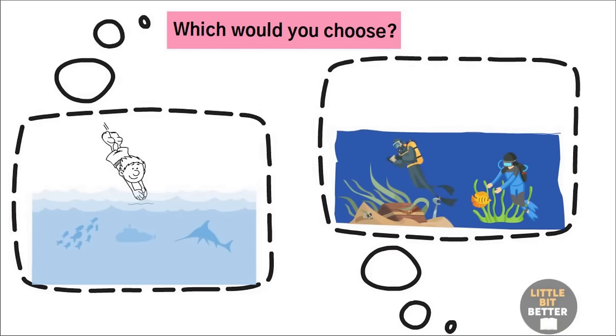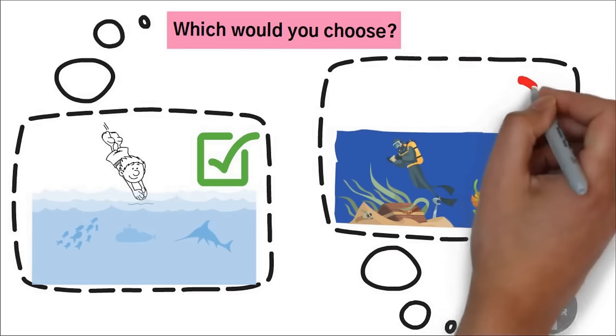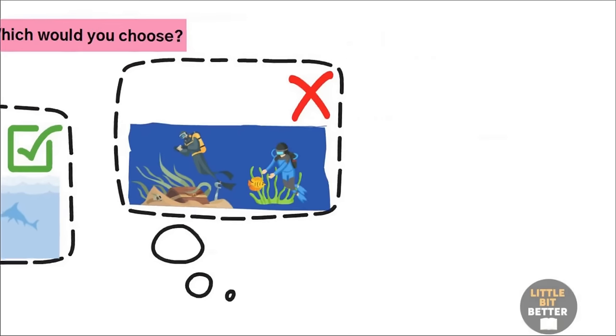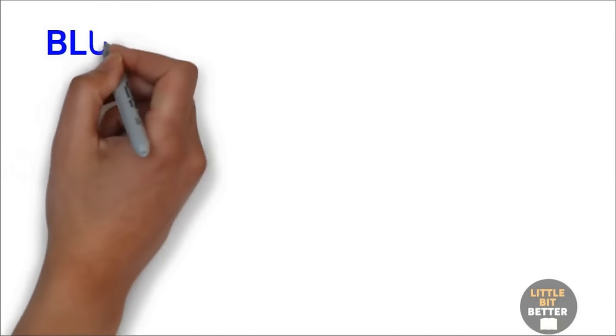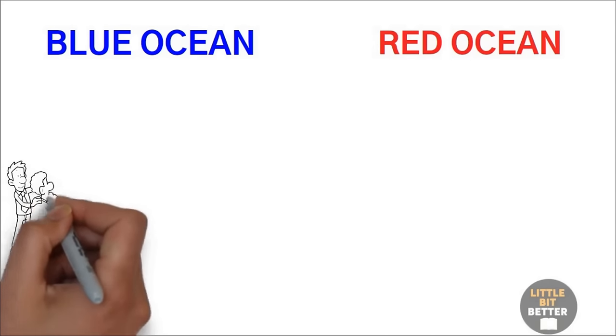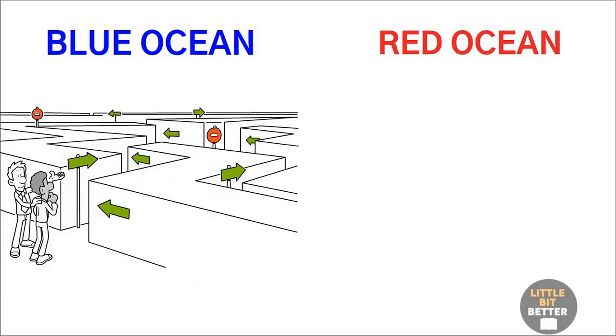Obviously the first option, right? Starting a business is like diving, and most entrepreneurs, unfortunately, choose the second option. According to this book, the market is divided into two oceans, a blue ocean and a red ocean. The blue ocean is exactly like the first option. There is no competition. The rules of the game haven't been set yet, and there is a lot of opportunity for profitable growth.